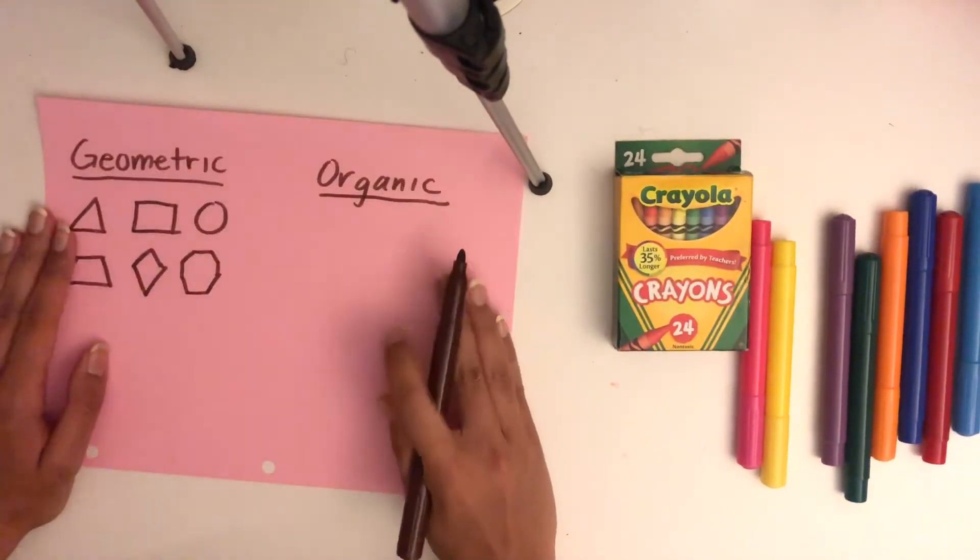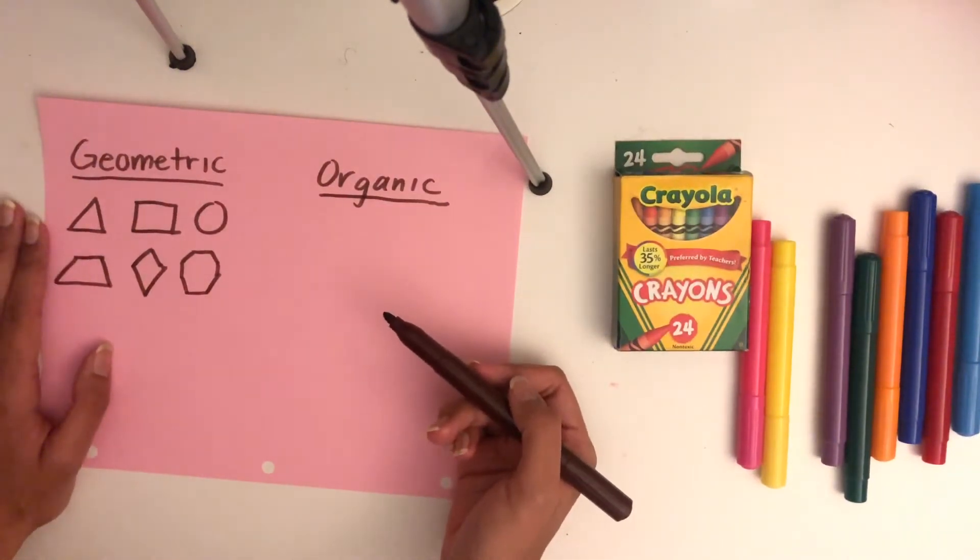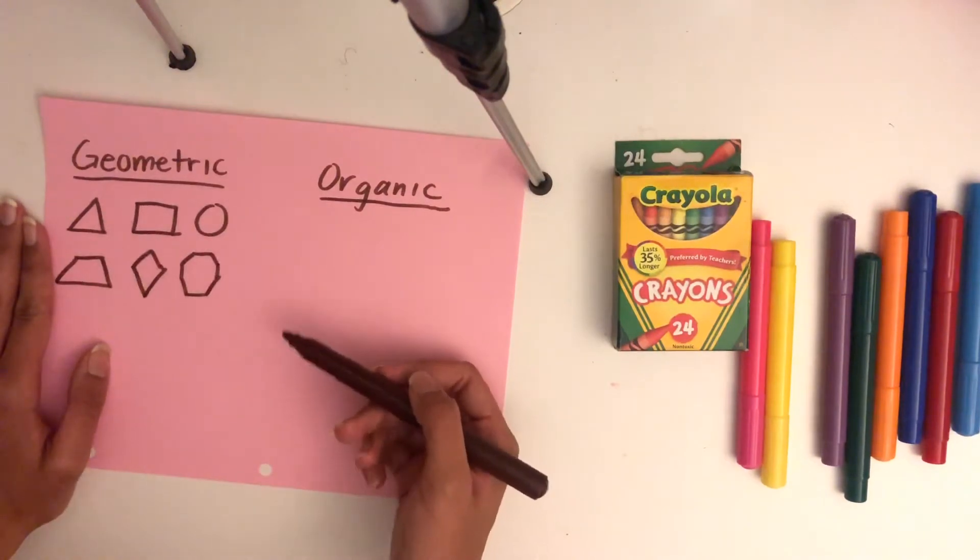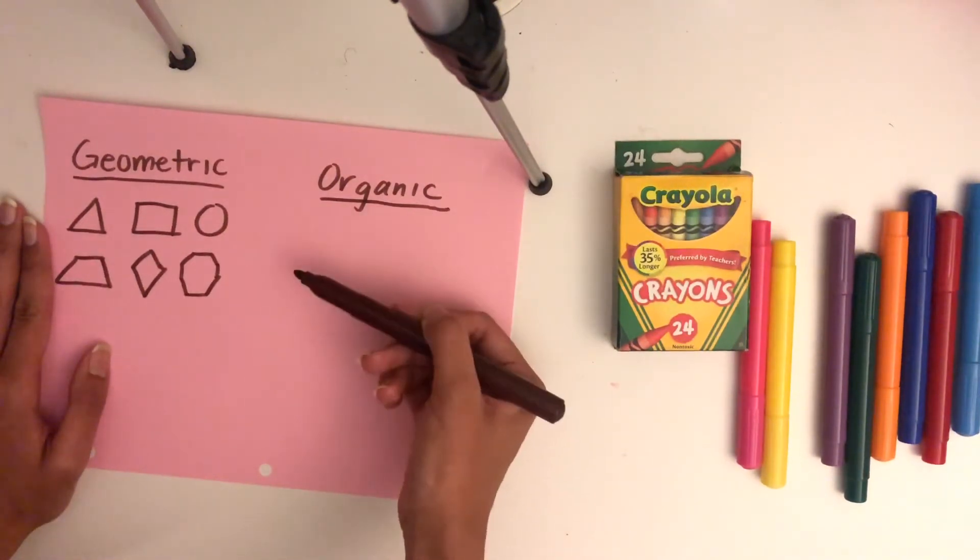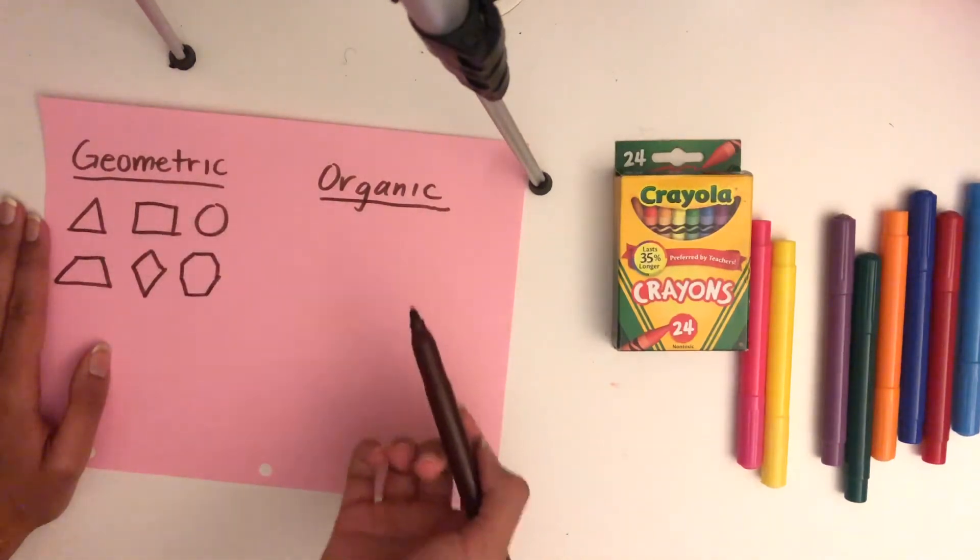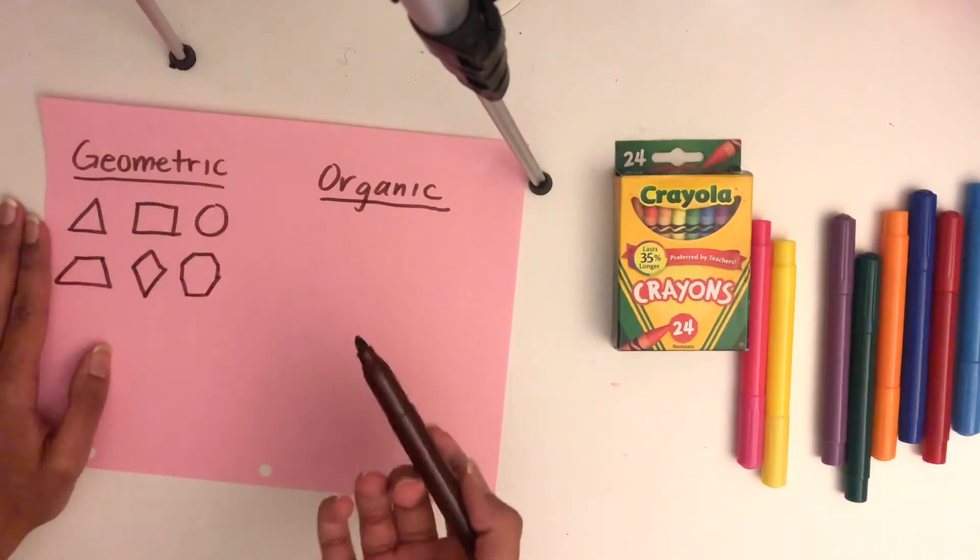There are lots of other geometric shapes that I'm sure you guys know. They can be described as mathematical, they have very sharp edges and angles. Organic shapes are more irregular and can have more smooth edges.